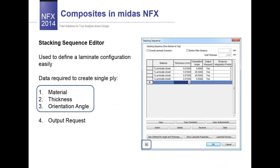Let's take a look at the stacking sequence editor, or layup editor. This dialog box is used to define the laminate configuration very easily. All you have to specify for a single ply is the material, thickness, and orientation angle. To define the material you can simply click on the icon and the material dialog box will appear. The rest of the parameters are related to the output, so you can easily check the output for each individual ply, and you can also change the Simpson integration points.